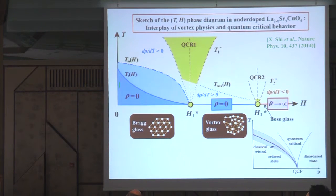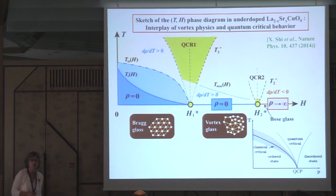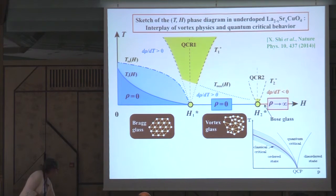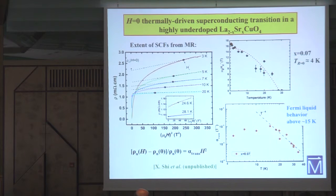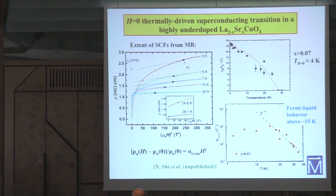Going back to zero field, we ask what happens as we change temperature. A motivation for these studies has been to investigate the extent and nature of superconducting fluctuations. From magnetoresistance of superconducting samples, we determine the field and temperature beyond which superconducting fluctuations are no longer seen. At temperatures above about 15 Kelvin, fluctuations are relatively weak and the normal state resistivity obeys Fermi liquid behavior. We are primarily interested in the lower temperature regime where this breaks down.